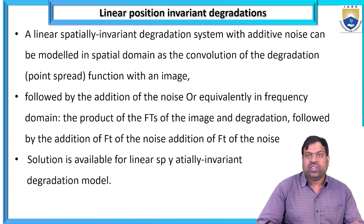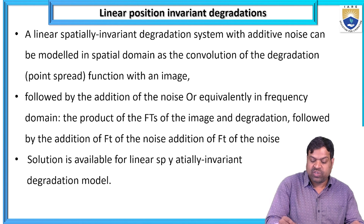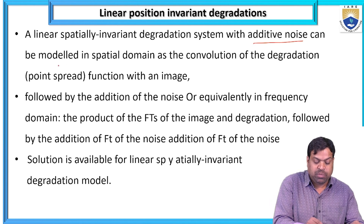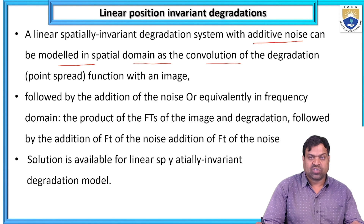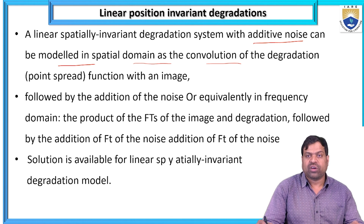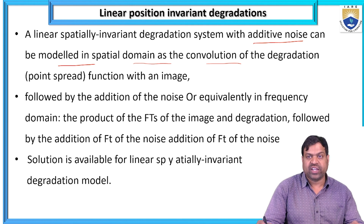In the Linear Position Invariant Degradation, a Linear Spatially Invariant System with Additive Noise can be modeled in spatial domain as a convolution of the degradation or point spread function with an image, followed by the addition of noise. Equivalently, in the frequency domain, the product of the Fourier transform of the image and degradation is followed by the addition of F of the noise. The solution is available for the Linear Spatially Invariant Degradation Model.